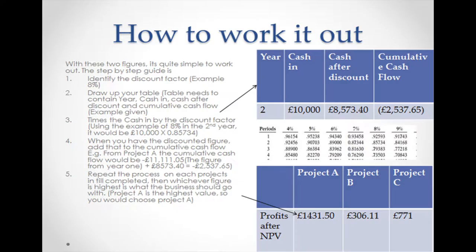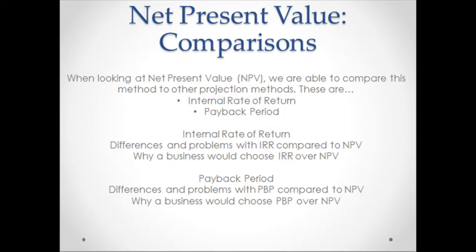You can easily enter the cash in and out for that year into the table. To get the cash value for that year, you multiply the cash-in value by the discount factor. For example, we multiply 10,000 by 0.85734, bringing the figure to £8,573.40. Finally, we add this amount to the cumulative cash flow, which reflects how much money we have made back off the initial investment. We repeat this process for however many years we want, then choose the project with the most cumulative cash flow.